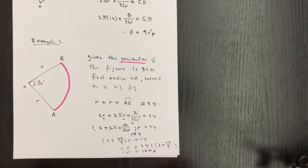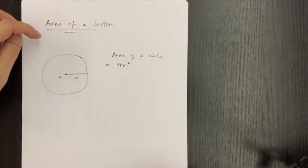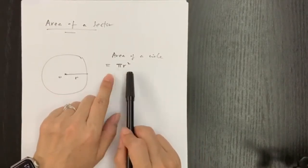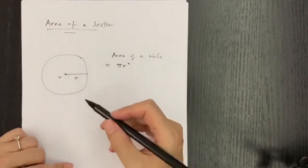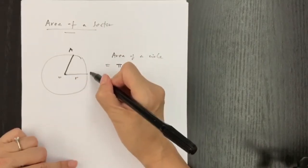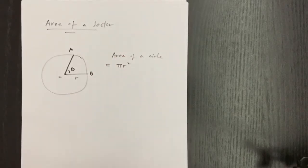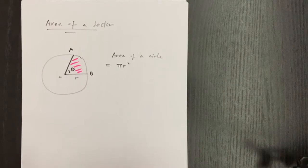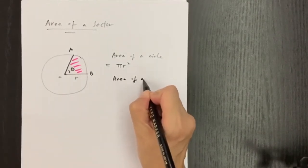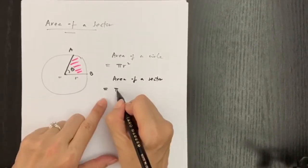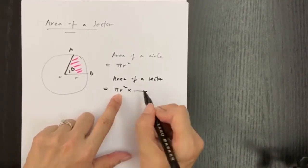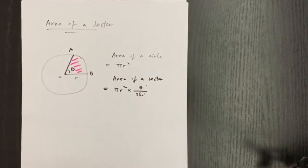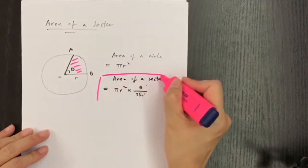Now we come to the area of a sector. For a whole circle with radius r, the formula to find the area is πr². The area of a sector means we only look at part of the circle. Points A and B form an angle theta. The sector is part of the total circle area, so the formula for area of a sector is πr² times theta over 360.